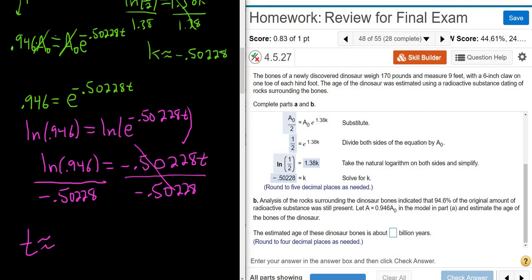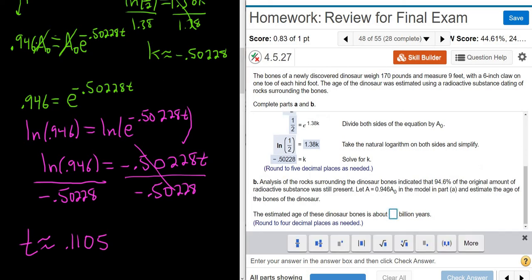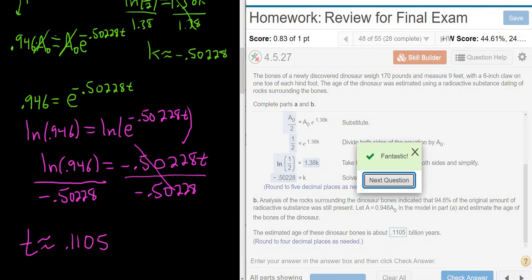Divided by negative 0.50228. Okay, that looks a little bit weird. Let me just double check here. LN 0.946 divided by negative 0. Yep, I got 0.1105. Okay, so I'm going to type that in. It's a decimal, so it's a little bit weird. But 0.1105. Let's check it. And it's correct. So I thought it'd be wrong. I thought we'd get like 1 billion years or something, but it's just 0.1105 billion. So it's like a fraction of a billion, which is still a really long time.